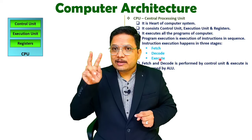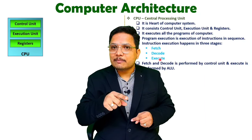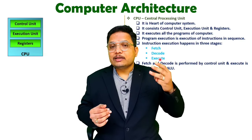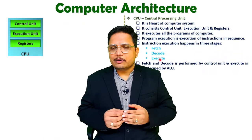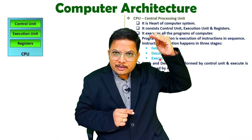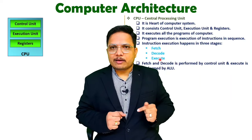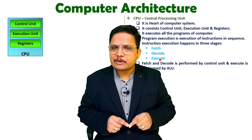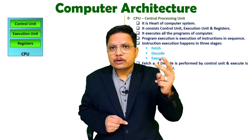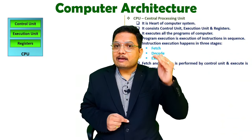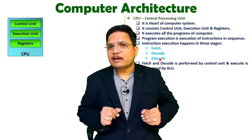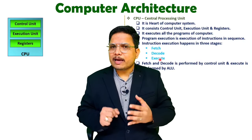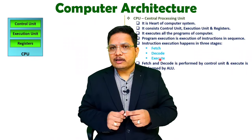In the execute stage, the ALU — arithmetic and logic unit — comes into the picture and executes the instruction. So: fetch means taking the instruction from memory into the CPU; decode means identifying what operation should be performed; and in the third stage, you execute that instruction using the ALU. That is how one single instruction is executed, and when you execute a series of instructions, you execute the program. Within the CPU, the control unit controls all operations; registers are used for execution of instructions; and the execution unit includes the arithmetic and logic unit, which performs addition, subtraction, multiplication, division, shifting, rotating, and many other operations.